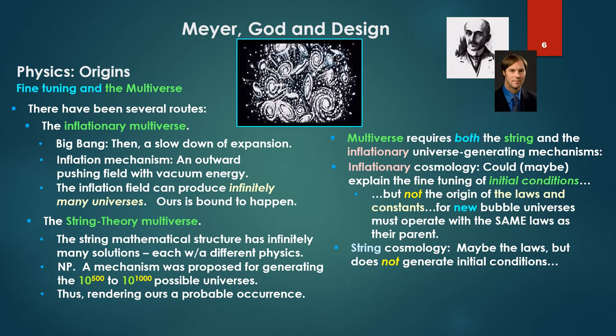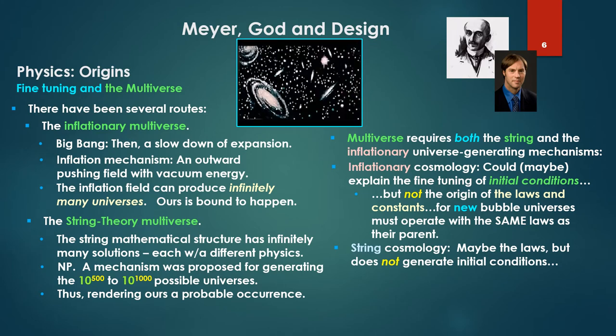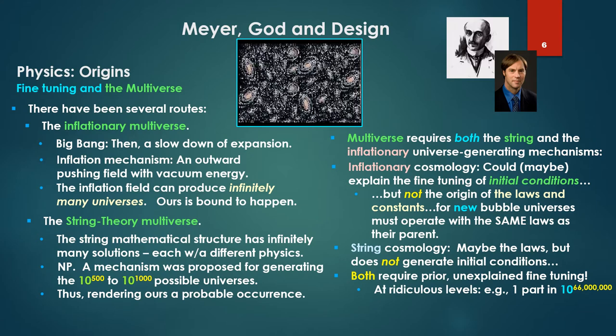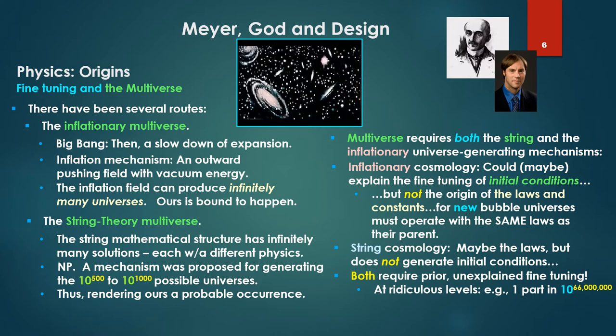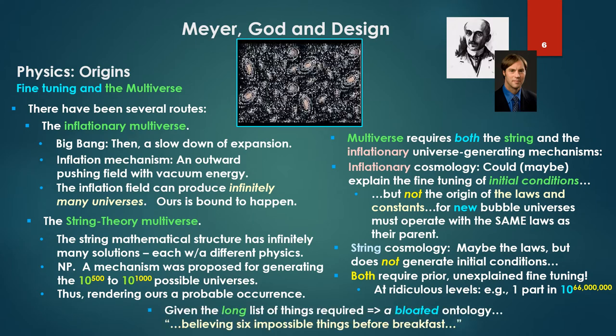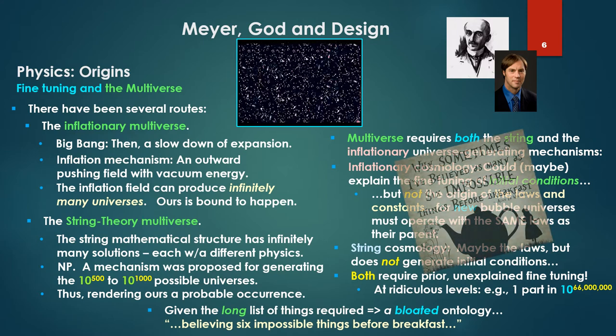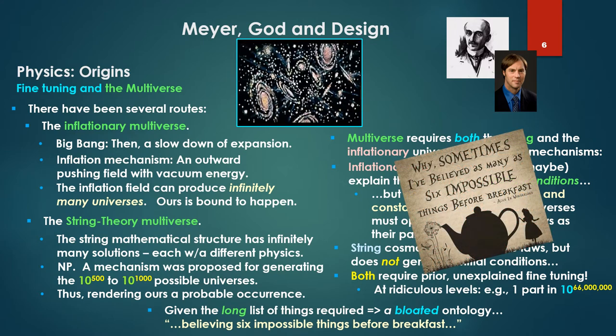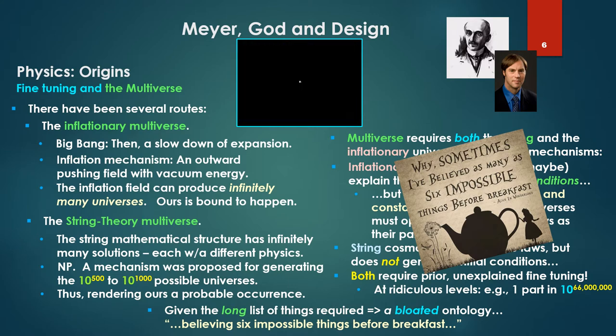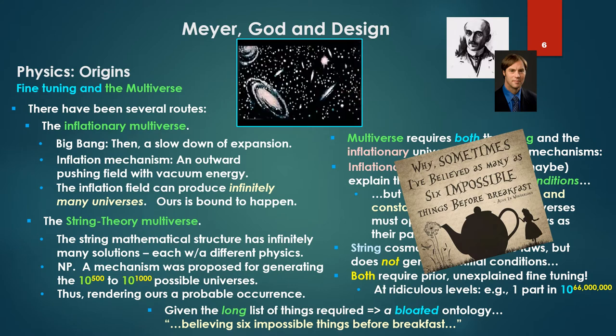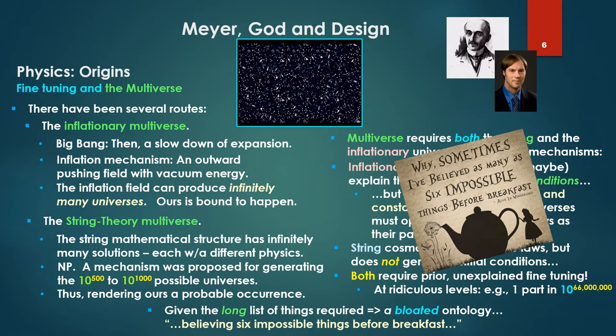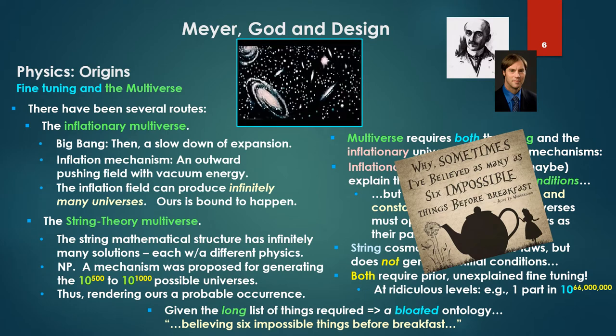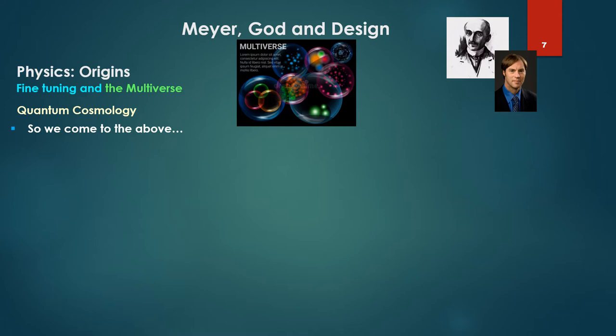String cosmology, well, maybe it could explain the laws, but it does not generate the initial conditions. Both of these require unexplained fine-tuning at ridiculous levels—for example, one part in 10 to the 66 million. Given the long list of things required, a very bloated ontology—he lists a long list of them and crazy things that have to be there for this to work. It's been compared to believing six impossible things before breakfast, like Alice in Wonderland.